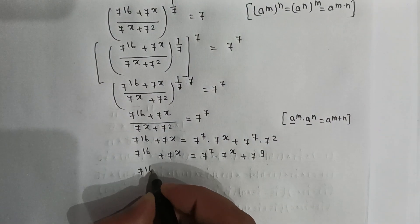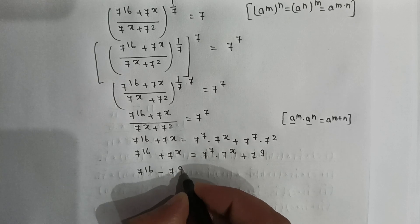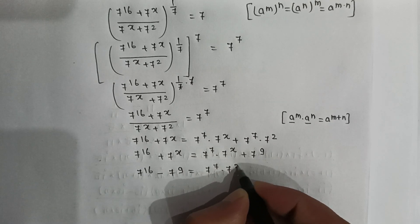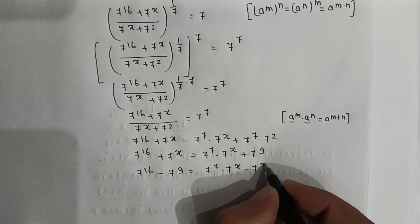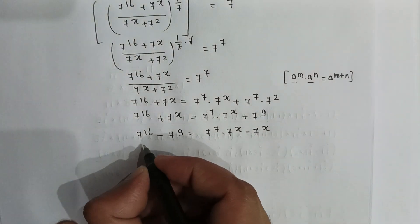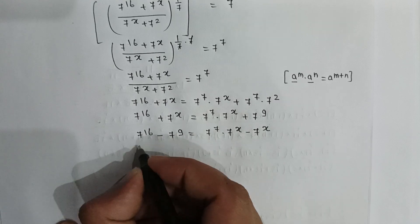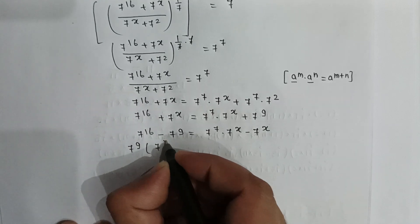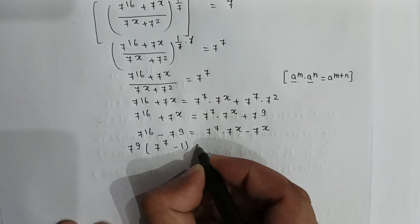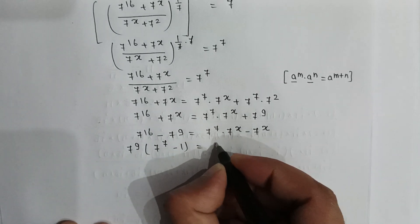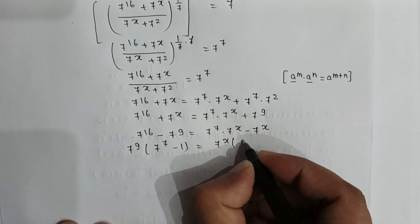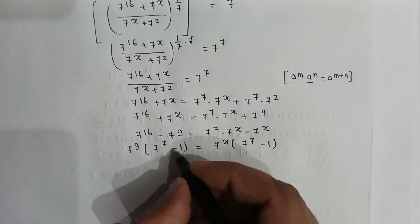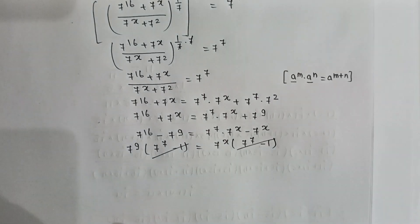Rearranging: 7 to the power 16 minus 7 to the power 9 is equal to 7 to the power 7 times 7 to the power x minus 7 to the power x. Taking 7 to the power 9 common on the left and 7 to the power x common on the right, the 7 to the power 7 minus 1 terms cancel out.